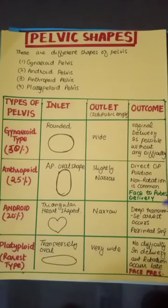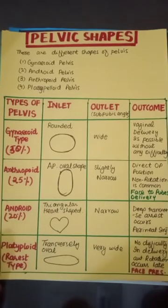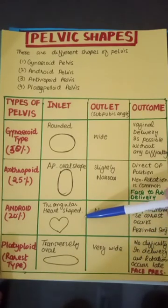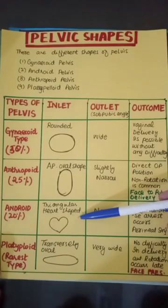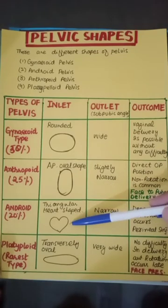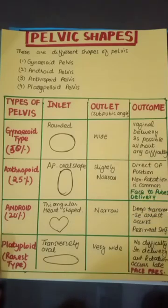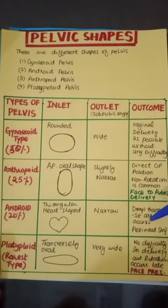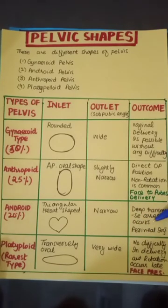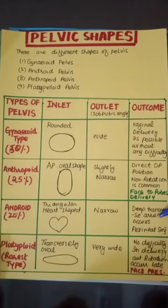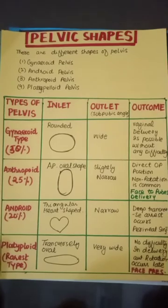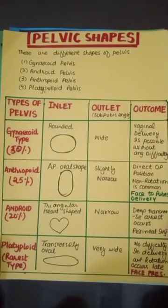The android pelvis — a way to remember it is that it resembles the male pelvis. The pelvic inlet is triangular or heart-shaped. This pelvis can cause deep transverse arrest, and the outlet is very narrow, making normal vaginal delivery not possible. If the fetus cannot rotate, a C-section is required.